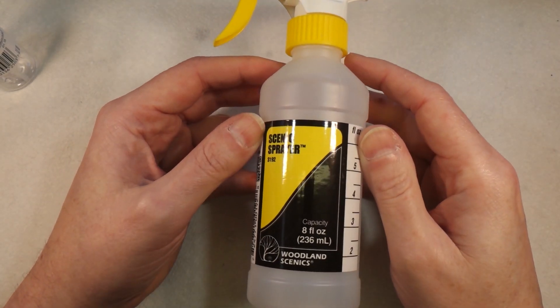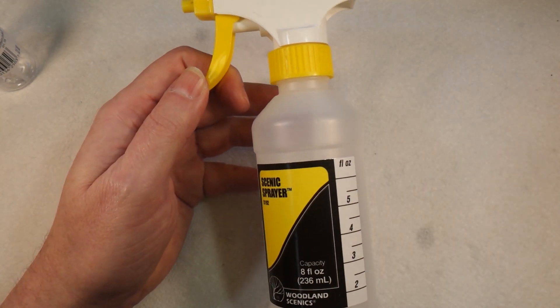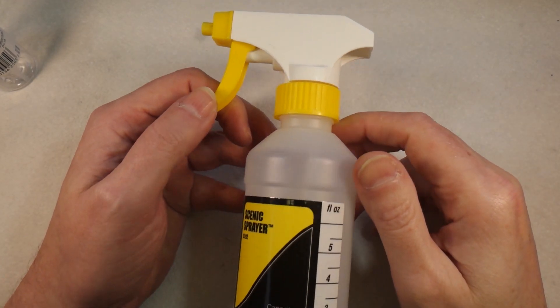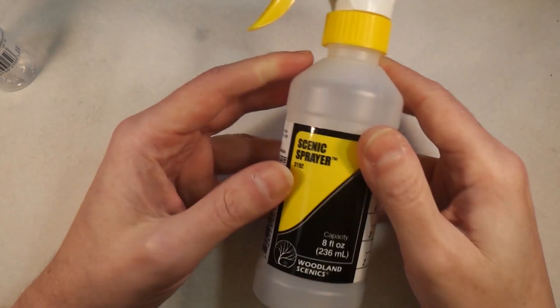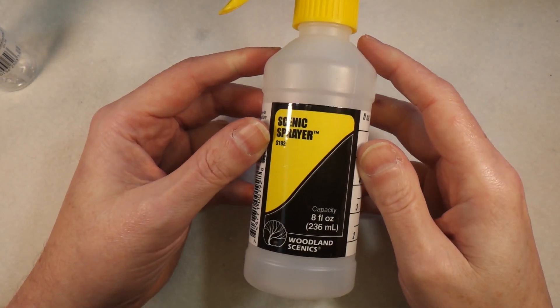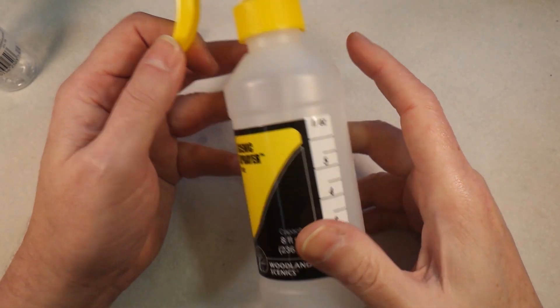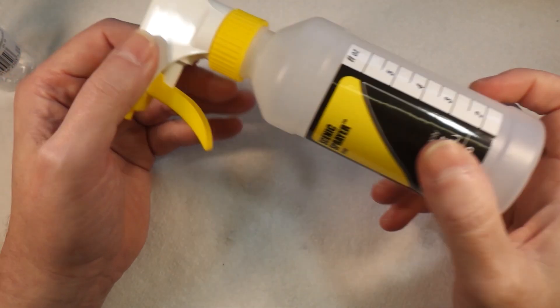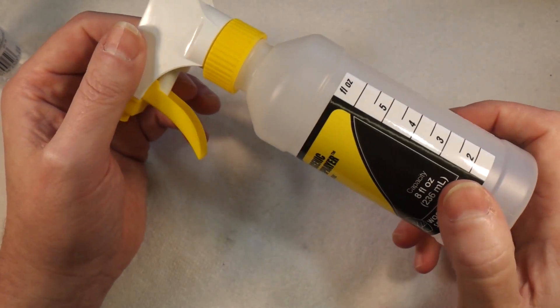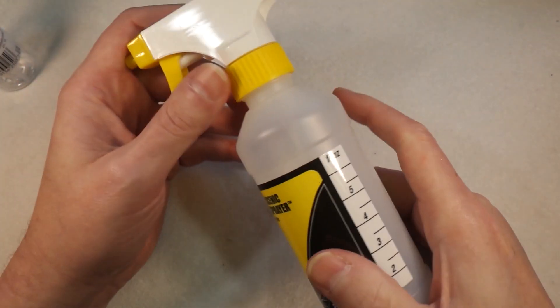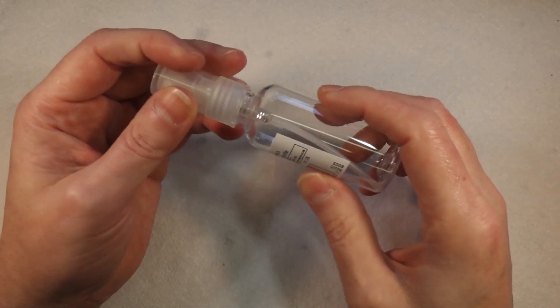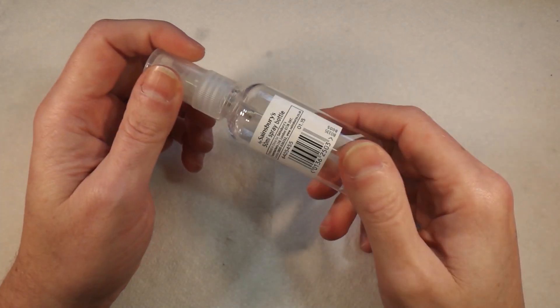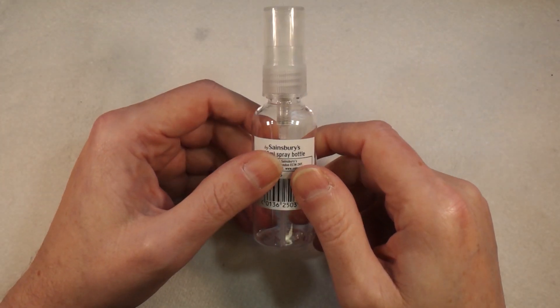I've also got this - this is a scenic sprayer from Woodland Scenics. This came free with a bottle of scenery glue. It's a bit bigger, a bit less portable but it will still do the job. Any kind of spray bottle will work fine. Today I'm going to use this because these are quite handy because you can put them in your pocket.